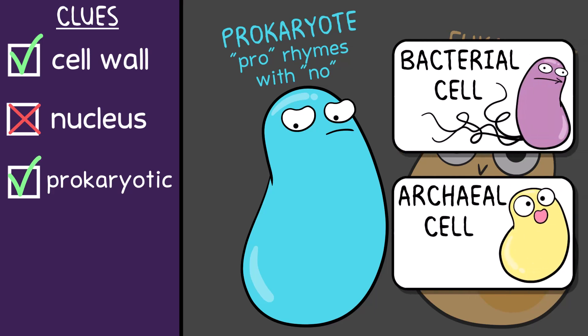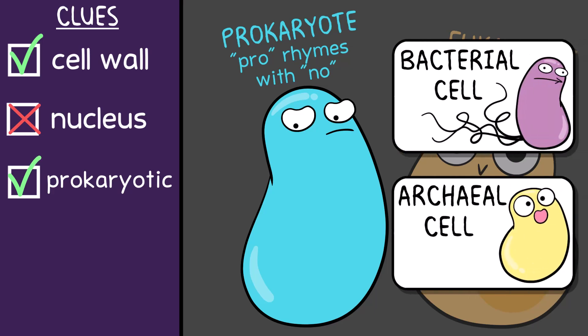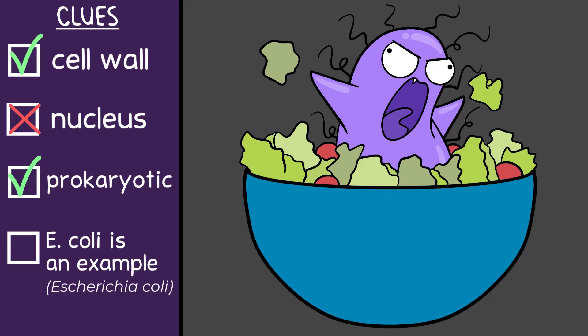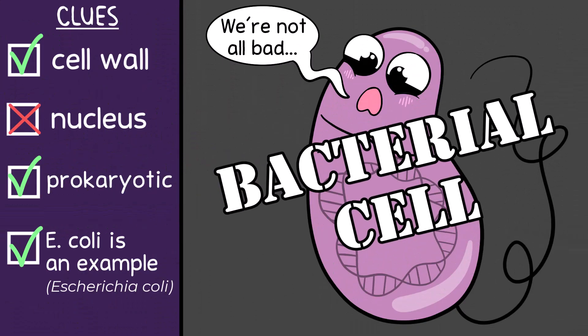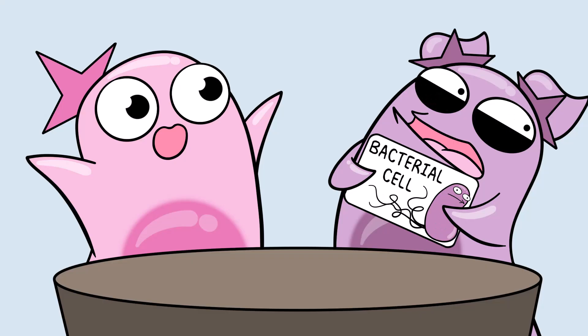Could E. coli be an example of the cell on your card? Sounds like an app or something. E. coli is a common type of microbe, and one that can make you sick — it can cause food poisoning, for example. Then yes. Bacterium — it's a bacterial cell. Fascinating cell type. While some can make us sick, many others are very helpful to organisms and ecosystems. You got it. Good job.